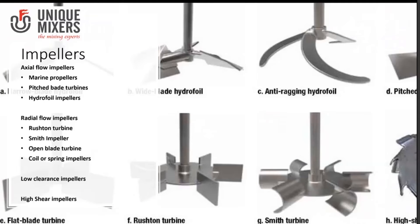So we have axial flow impellers, radial flow impellers, low clearance impellers, and high shear impellers. Typical axial flow impellers are marine propellers, pitch blade turbines, and hydrofoil impellers — also termed high efficiency impellers. Radial flow impellers include the Rushton turbine, the Smith impeller, the open blade turbine, and coil or spring impellers. The anchor impeller, the anchor agitator, and the helical agitator are categorized as low clearance impellers. The saw tooth impeller classifies as a high shear impeller.